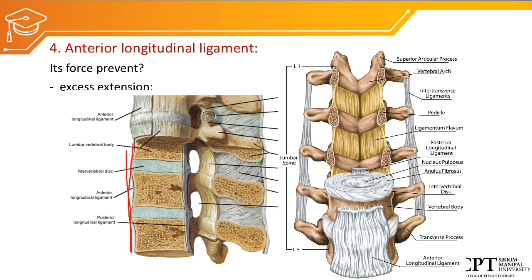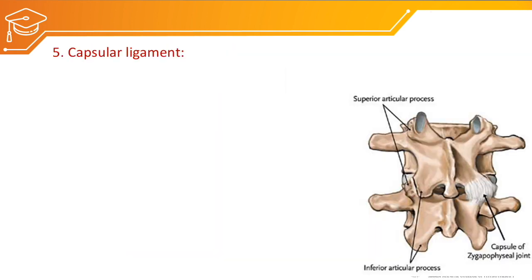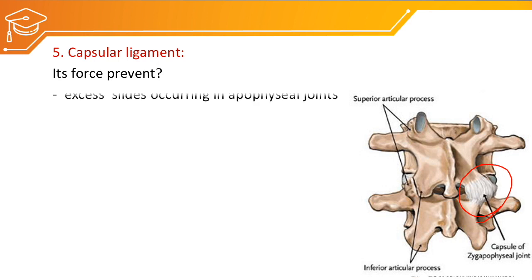We have the capsular ligament, which covers the facet joint or apophysial joint. It generates force which prevents excessive sliding of the facet joint.